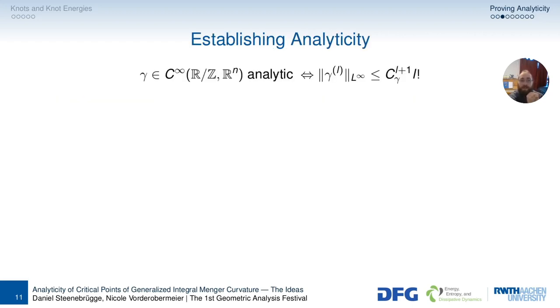Well, looking up on Wikipedia, you see that gamma is in C infinity. If gamma is in C infinity, it is analytic if and only if the L derivatives are bounded by C to the L plus 1 times L factorial. How do we get that?